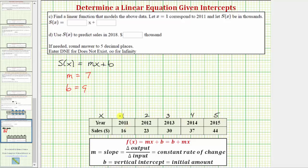Another way would be to use an ordered pair from the table. So let's also show that method. Assuming we know the slope is seven, we know S(x) must equal 7x + b. And now let's use the ordered pair from this first column, where when x is one, the sales, or S(x) equals 16.